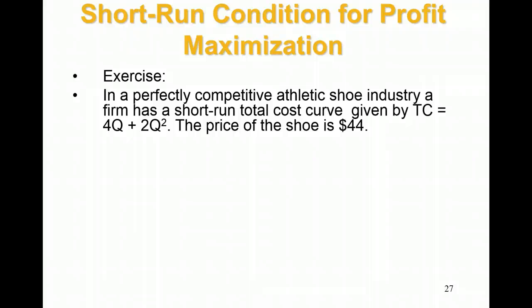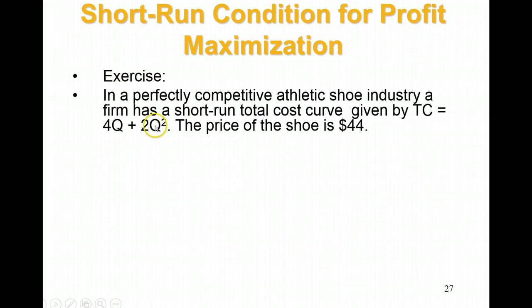In a perfectly competitive athletic shoe industry, a firm has a short run total cost curve given by TC equals 4Q plus 2Q squared. The price of the shoe is $44. So I've given you three things: the total cost curve — plug in Q and you get total cost at that rate of output — and I'm also giving you price, which also means you know marginal revenue.